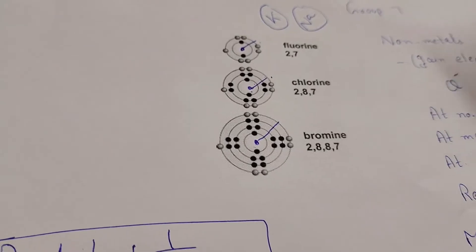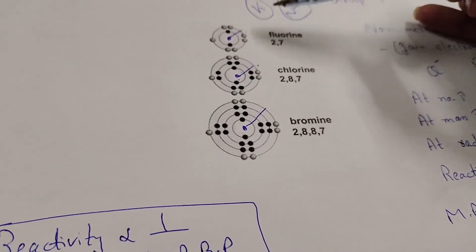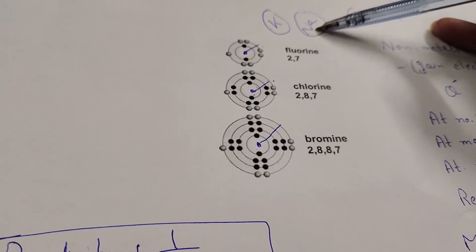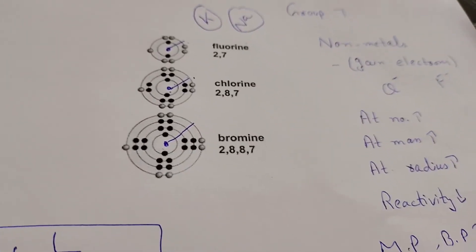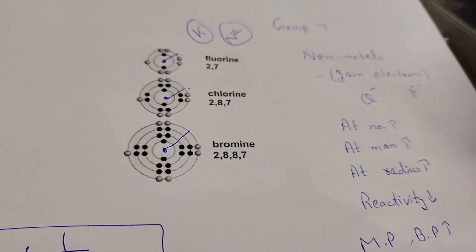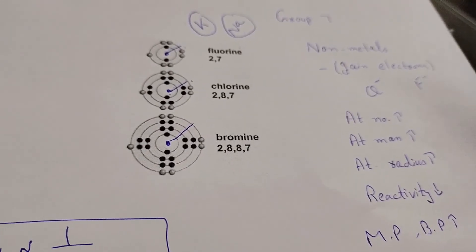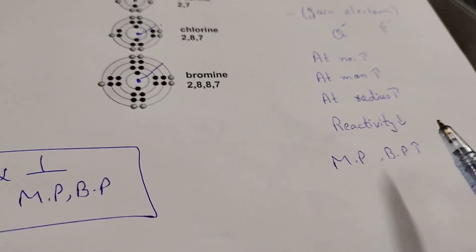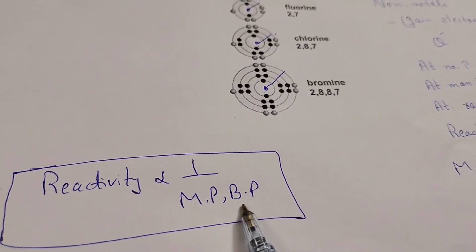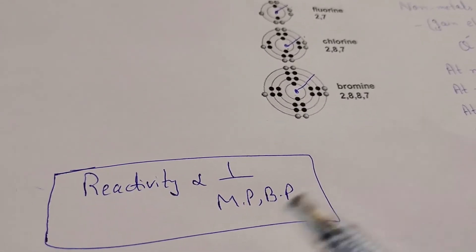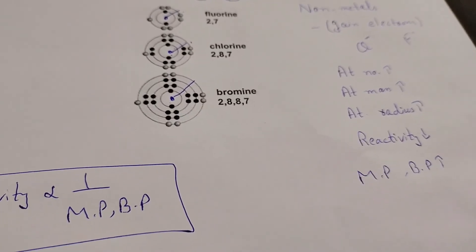When fluorine reacts with potassium or sodium, we get potassium fluoride or sodium fluoride; chlorine gives potassium chloride or sodium chloride. Group seven elements are called halogens because whenever they react with metals they form salts. Since reactivity and melting/boiling point have an inverse relationship, as reactivity decreases down group seven, melting point and boiling point increase.